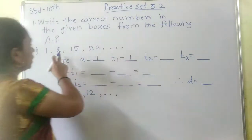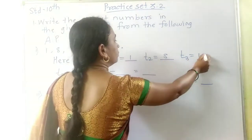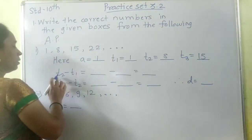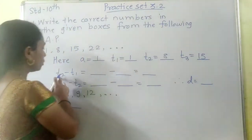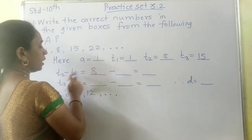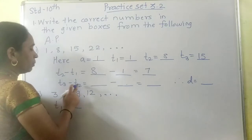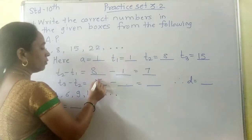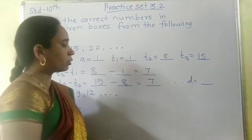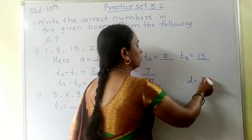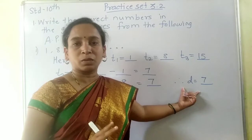Then T2 gives 8 and T3, the third term, is 15. Now we have to check the difference. T2 minus T1: 8 minus 1 equals 7. T3 minus T2: 15 minus 8 equals 7. So in both cases D equals 7. The given sequence is in AP because the common difference between any two consecutive numbers is 7.